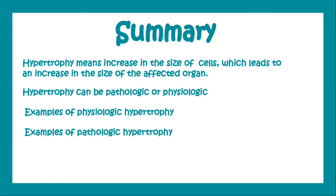Hypertrophy can be pathological or physiological. We talked about examples of physiological hypertrophy — that is, due to increased functional demand or the pregnant uterus — and we talked about examples of pathological hypertrophy, that is hypertensive cardiac hypertrophy, about which we will talk in detail in a separate video.